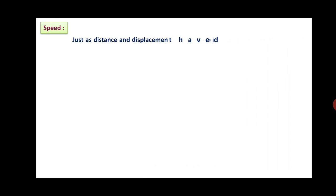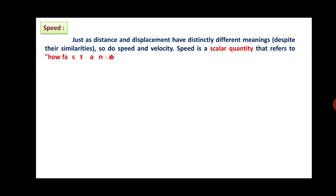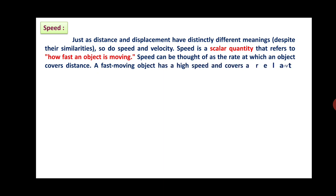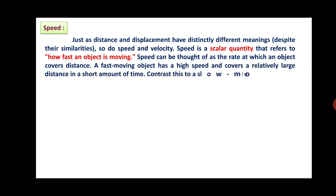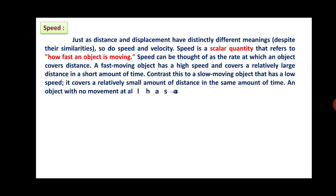With these examples, we now start with Speed. Just as Distance and Displacement have distinctly different meanings despite their similarities, so do Speed and Velocity. Speed is a scalar quantity that refers to how fast an object is moving. Speed can be thought of as the rate at which an object covers distance. A fast-moving object has a high speed and covers a relatively large distance in a short amount of time, while a slow-moving object has a low speed. An object with no movement at all is said to be at zero speed.